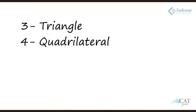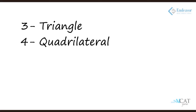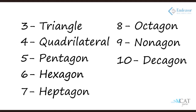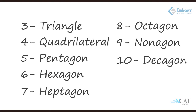Similarly, a four-sided polygon is nothing but a quadrilateral — of course we have many more names for it, which we shall discuss. A five-sided one is a pentagon, a six-sided one is a hexagon, and so on. So a polygon can have n number of sides.